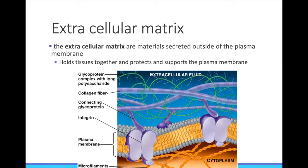The plasma membrane makes up the outside boundary of the cell, but that doesn't mean there is nothing outside of that. Animal cells have a complex extracellular matrix. The prefix extra means outside of — think about the word extraterrestrial. So the extracellular matrix is all of the molecules outside of the cell, used for holding cells together so they can form into tissues, and also for supporting and protecting the plasma membrane.